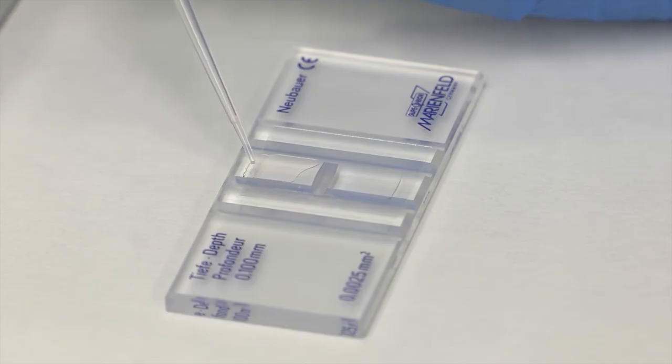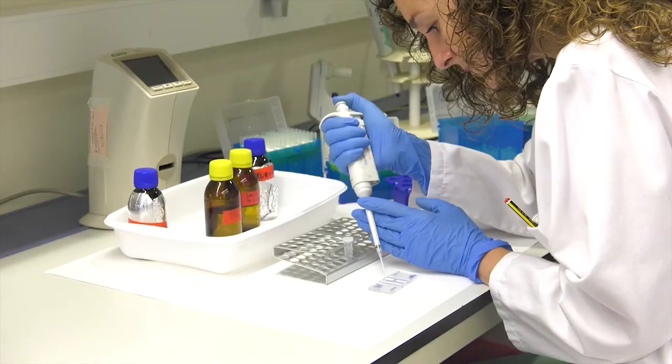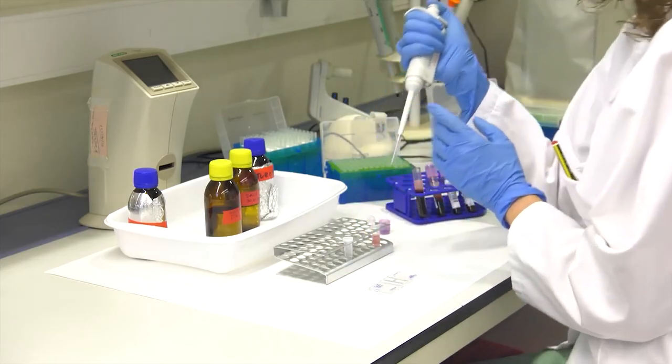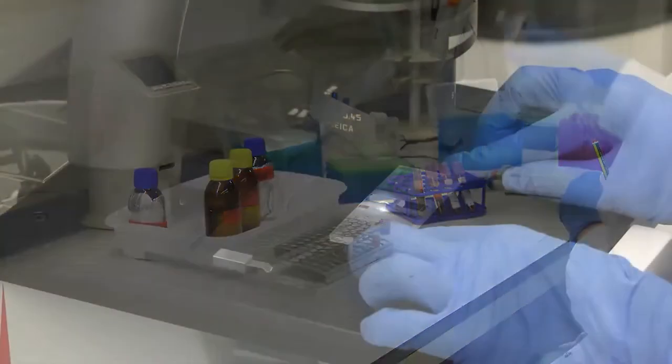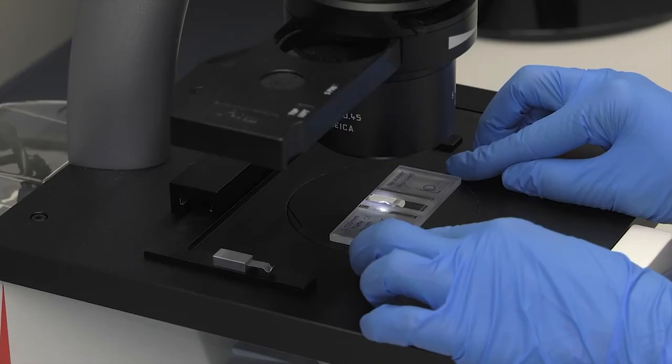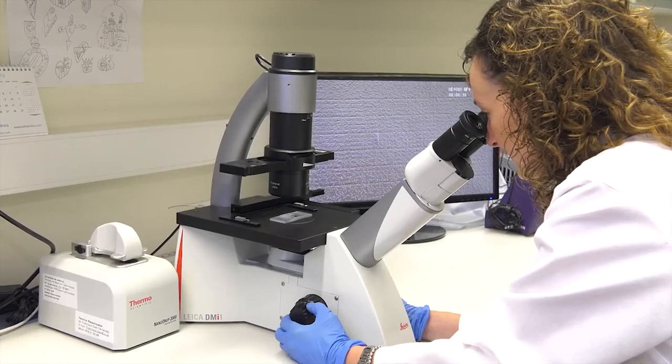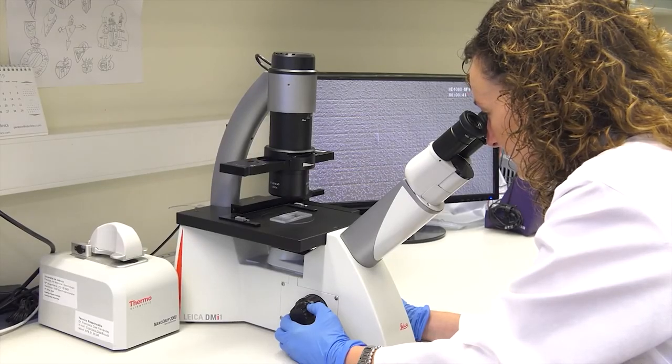It is advisable to maintain a certain inclination between the pipette tip and the chamber to facilitate capillary entry of the sample. Once the sample has been deposited in the chamber, we can observe it under the microscope, starting with the 4x magnification objective to locate and focus on the central grid and to check that the distribution of cells is homogeneous.